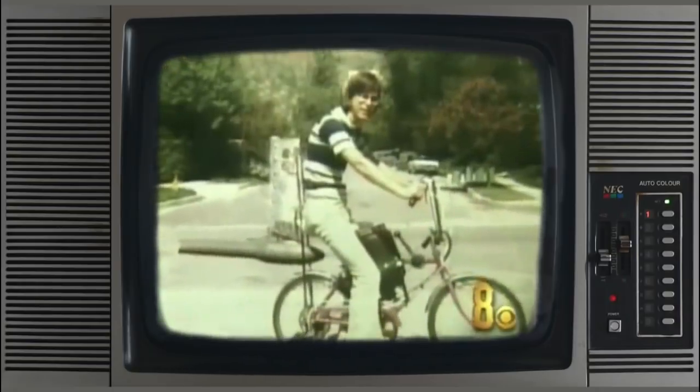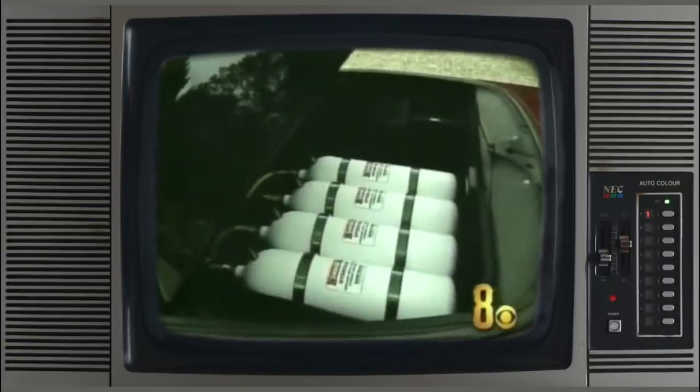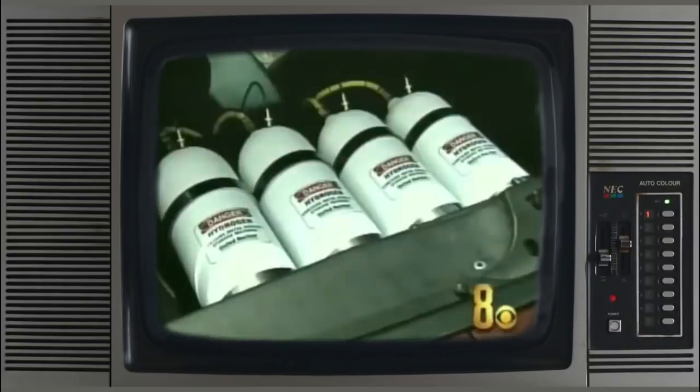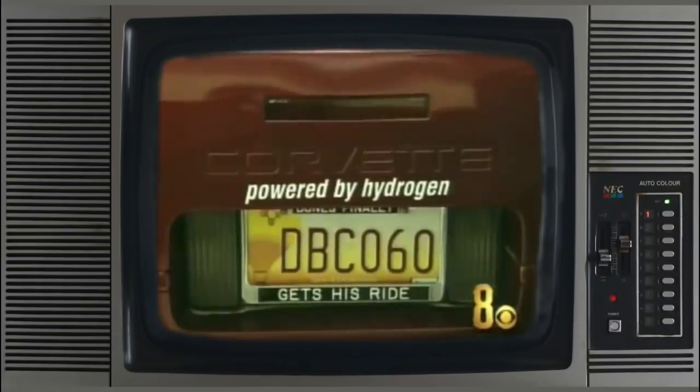As a teenager, Bob Lazar built a jet-powered bicycle, later a jet Honda, then a jet dragster. These days, he's focused on a different propulsion system. Every vehicle we have here is powered by hydrogen. At his new home in rural New Mexico, Lazar's been working on a conversion kit that will turn any car into a hydrogen hybrid.